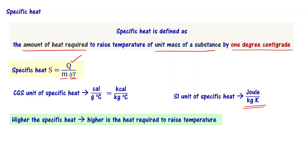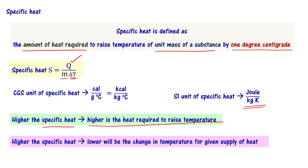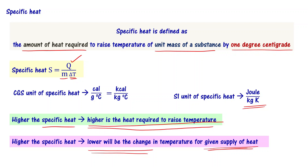This point has to be remembered: higher the specific heat of the material, higher is the heat required to raise the temperature. Higher the specific heat of the material, lower will be the change in temperature for a given supply of heat — meaning if heat supply is constant, a higher specific heat material will show a smaller change in temperature. For example, to achieve a 10-degree change in temperature in a higher specific heat material, a higher amount of heat must be applied.